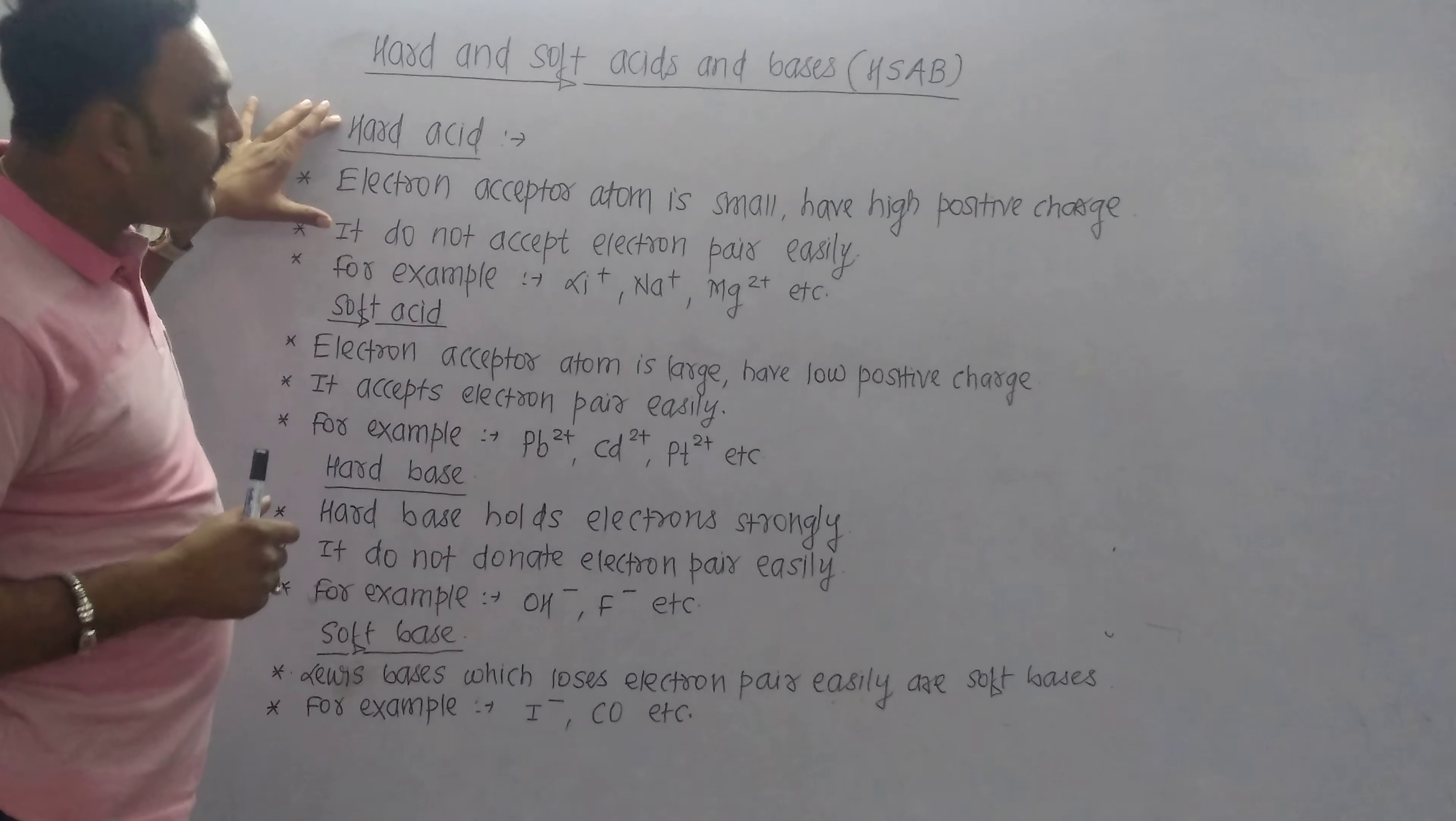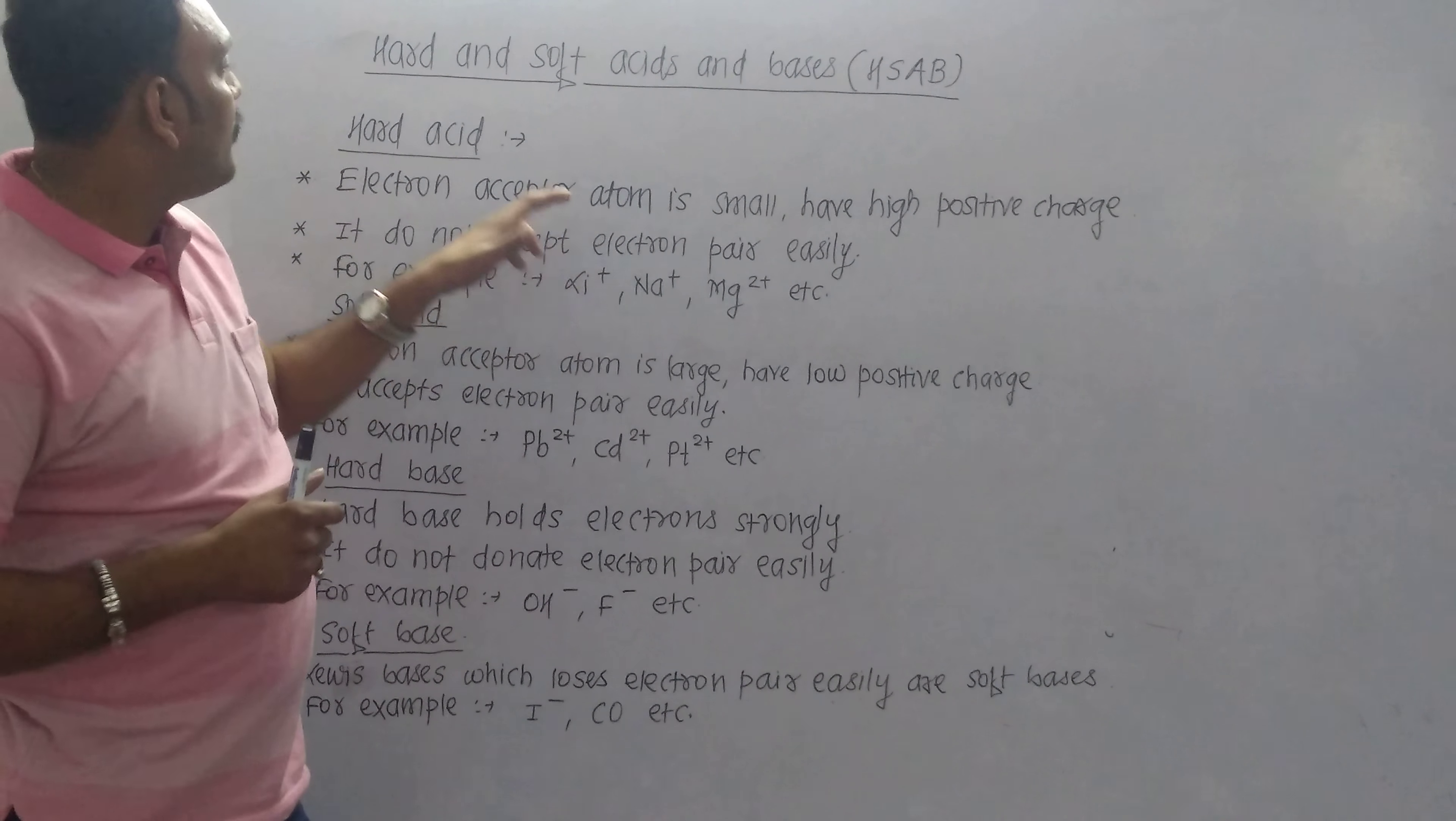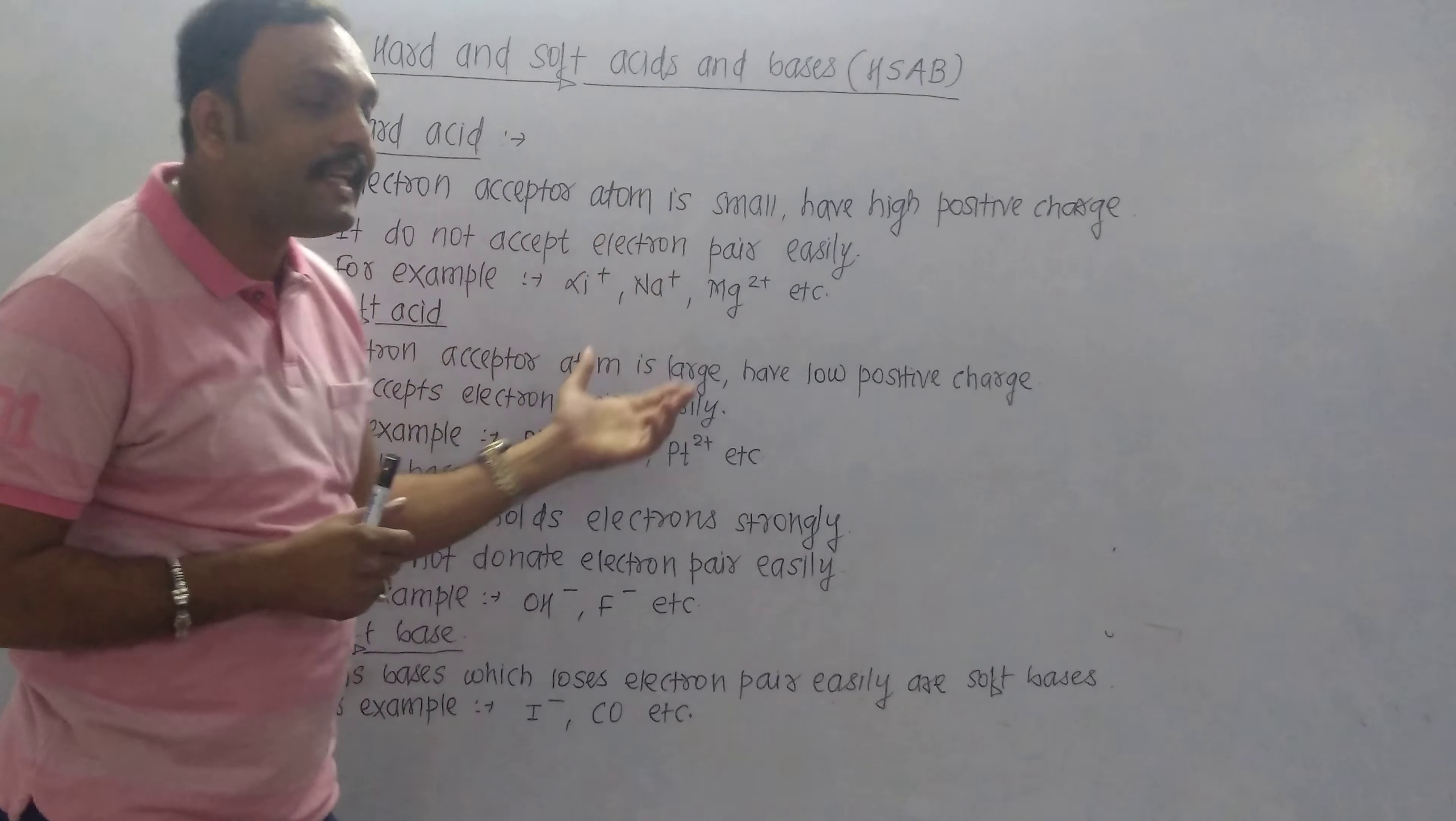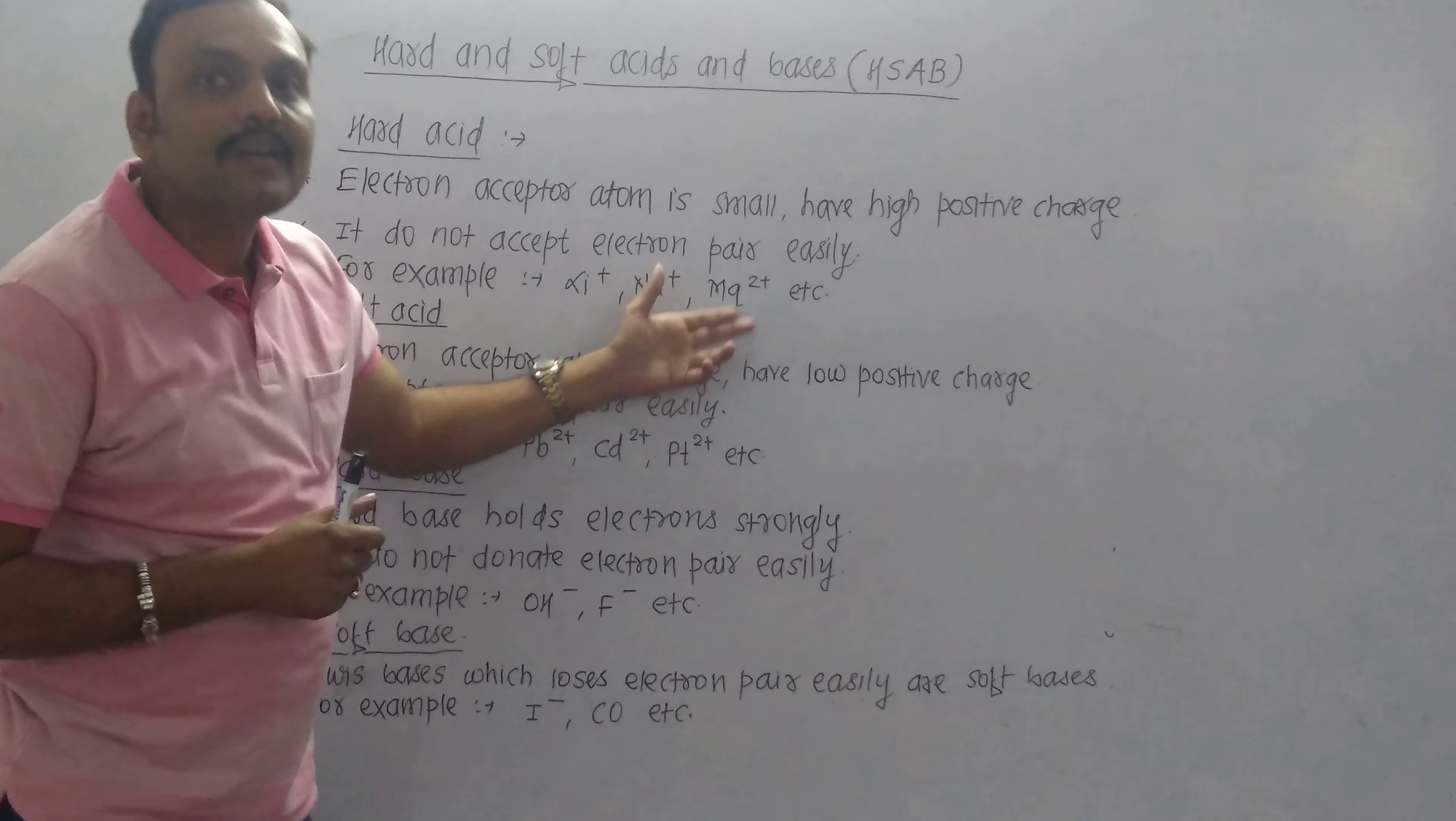A hard acid is a species which has a high positive charge, and the acceptor atom is smaller. Therefore, it does not accept an electron pair easily. Examples are Li+, Na+, Mg2+.